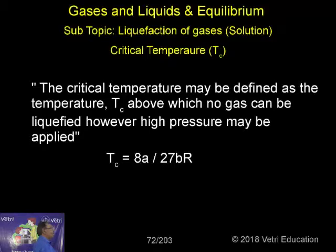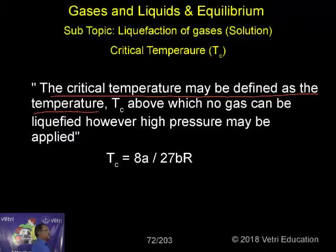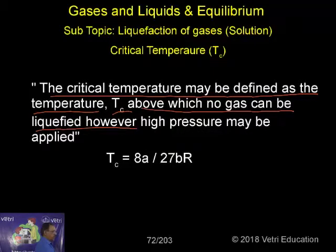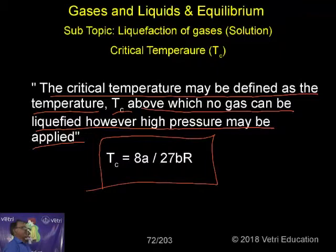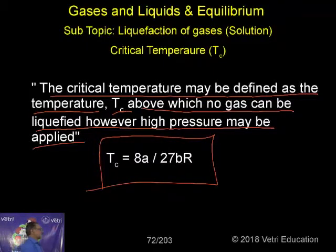What is critical temperature? The critical temperature may be defined as the temperature Tc above which no gas can be liquefied, however high a pressure may be applied. This is given by the Van der Waals constant: Tc = 8A / 27BR, where A and B are Van der Waals constants and R is the gas constant.